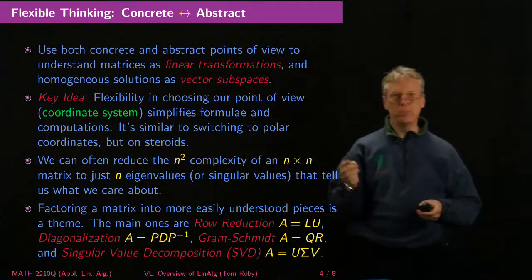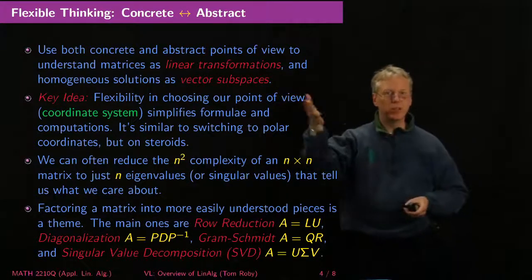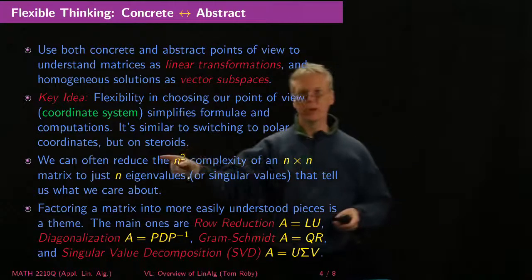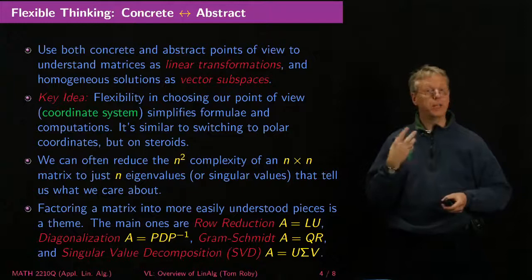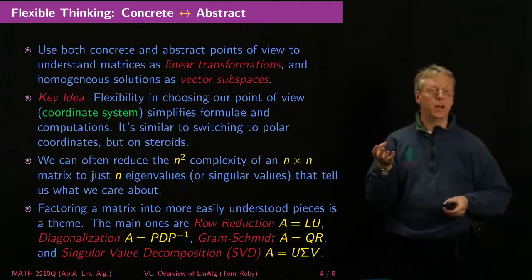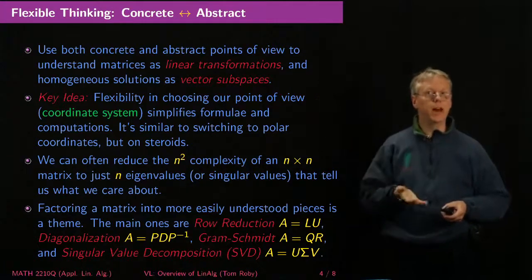Now, if you think about it, a matrix, even that 2x2 matrix had four entries, and if you've got like a 5x5 matrix that's 25 entries, it's growing like n squared, which is pretty fast. Often we can understand, with the right coordinate system, we can understand a matrix almost completely, as well as we need to, just using its n eigenvalues.